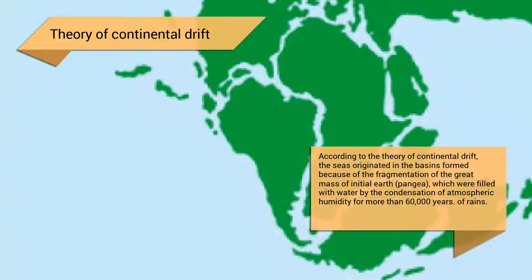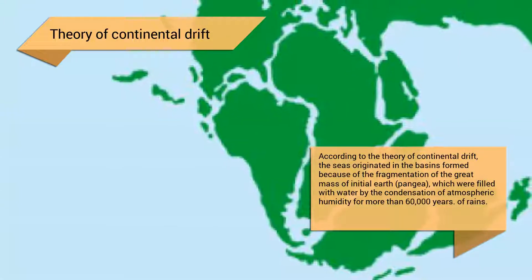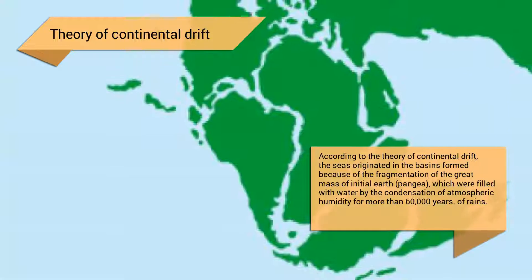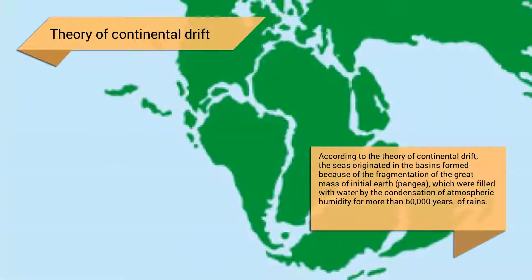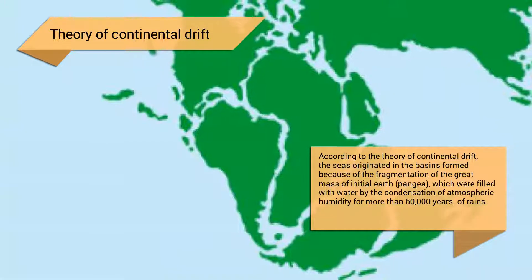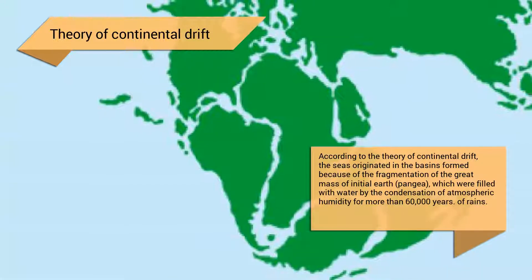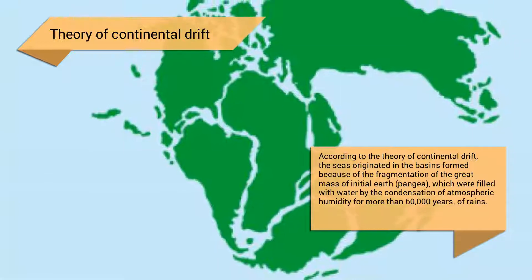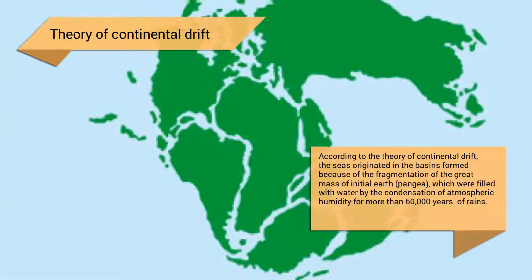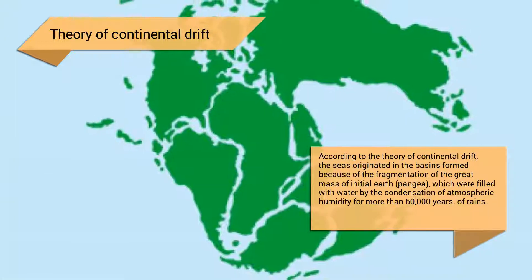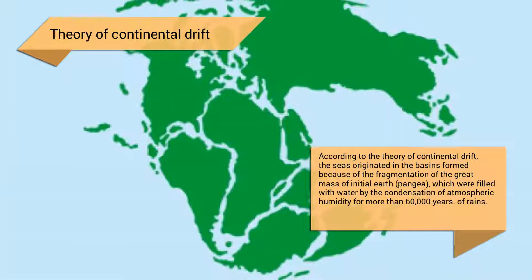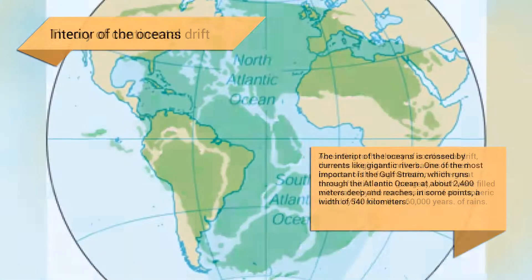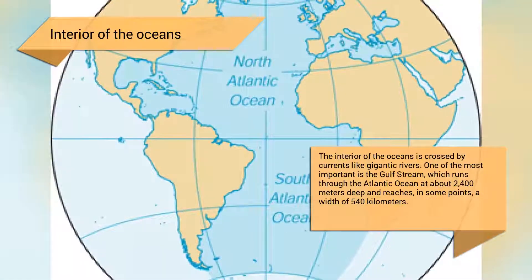According to the theory of continental drift, the seas originated in the basins formed because of the fragmentation of the great initial landmass Pangea, which were filled with water by the condensation of atmospheric humidity over more than 60,000 years of rains.